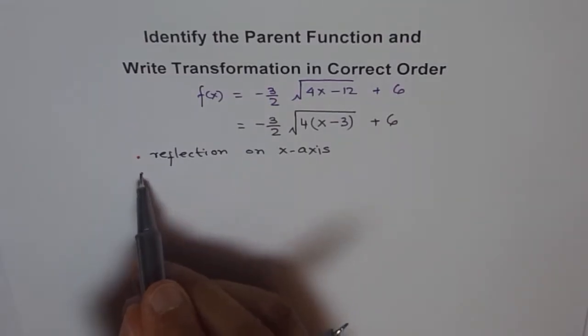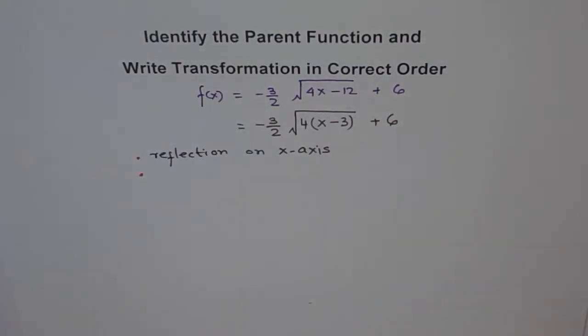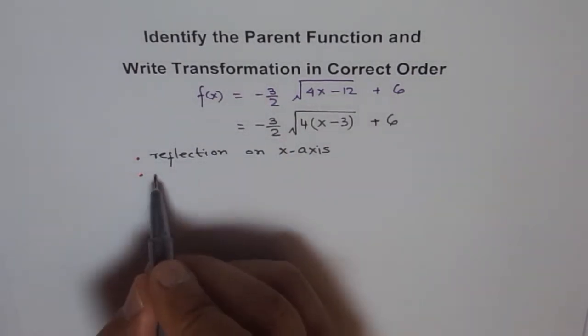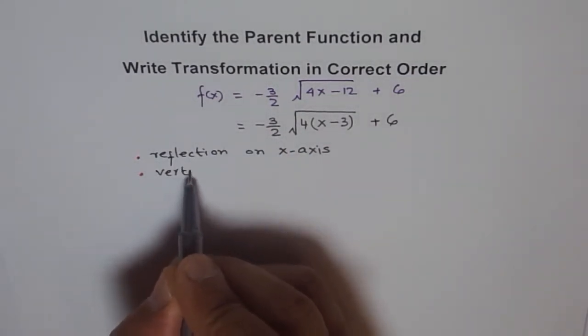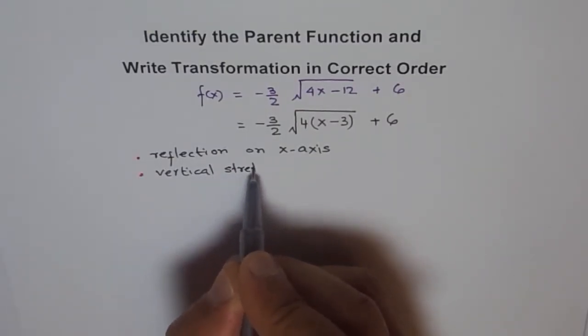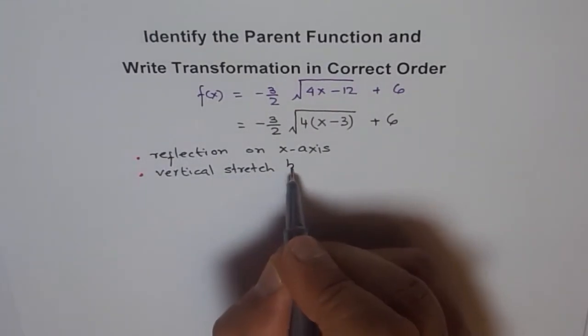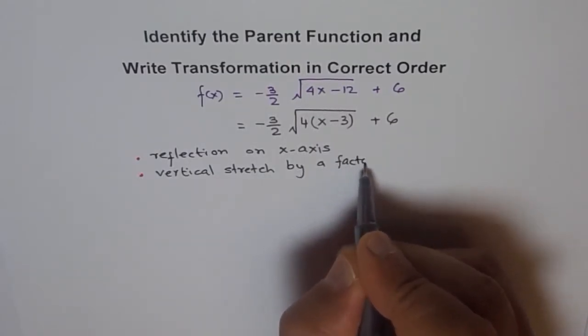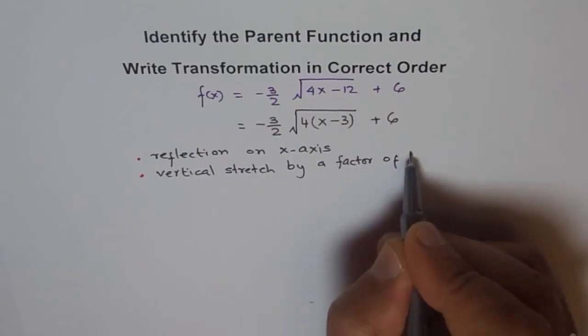Now, second. Second is 3 by 2. Is 3 by 2 greater than 1 or less than 1? Well, 3 by 2 is greater than 1. That means vertical stretch. So it is vertical stretch by a factor of 3 over 2.